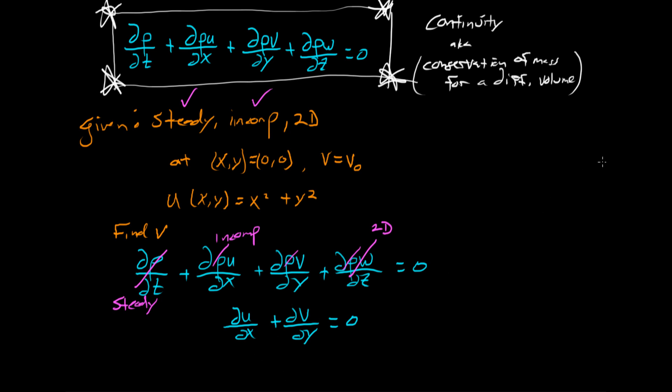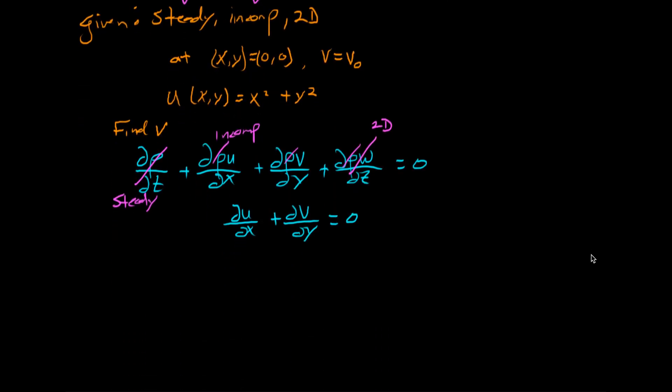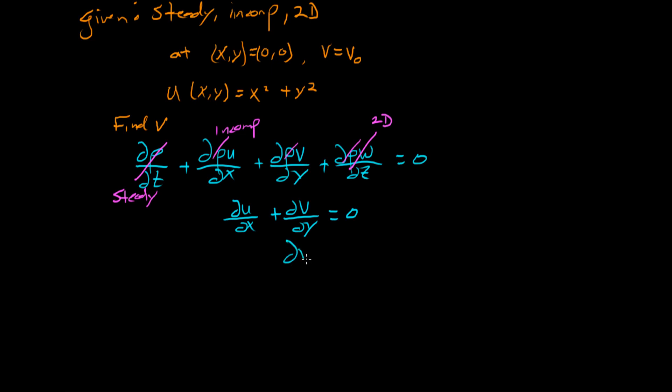Since we're looking for v, let's get that on the left hand side and write dv dy is equal to negative du dx. We have u, so we can substitute that in minus d by dx of x squared plus y squared. And we can even evaluate that derivative. The derivative of this with respect to x is just minus 2x.